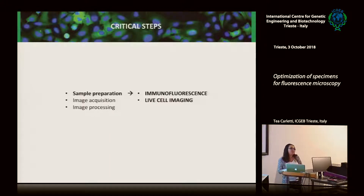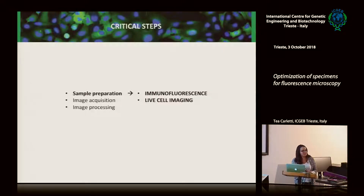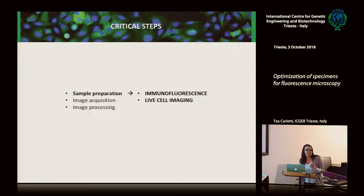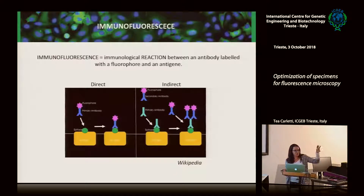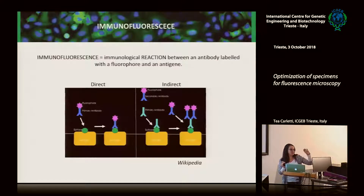I will talk only about immunofluorescence — I'm sorry to disappoint you but it will be like cells fixed. I've never worked with tissue, but for any questions about tissue there are enough experienced people in the audience to answer. I also have a little experience in live imaging. Immunofluorescence — let's start with the definition: it's a simple immunological reaction, an antibody conjugated to a fluorophore binding an antigen. Your aim is to make the antibody able to go inside your cells, recognize your antigen, make the reaction, and then acquire the output.